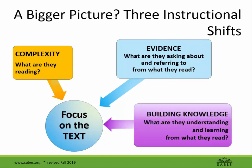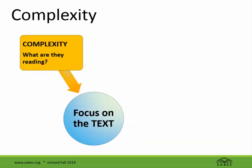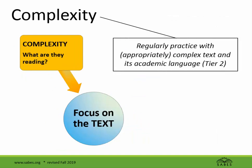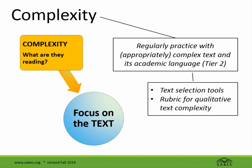Taking them in order: Complexity. Regularly practice with complex texts and academic language, also known as Tier 2 words. Choose text at appropriate levels of complexity using text selection tools and qualitative rubrics.